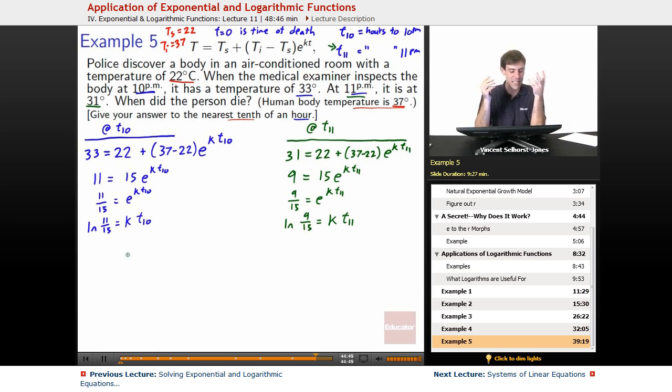How is T10 connected to T11? Of course! 11 p.m. is one hour after 10 p.m., right? To get from 10 p.m. to 11 p.m., you go up one hour. So however many hours after death T10 is, we know that if we add 1 to that, we'll wind up being at the 11 p.m. mark. So T10 plus 1 equals T11.